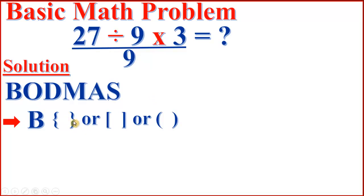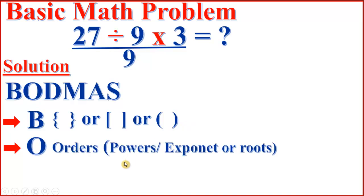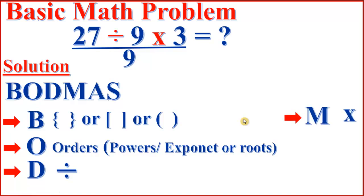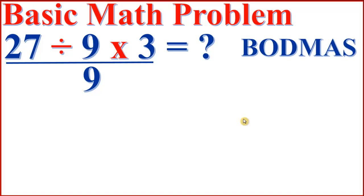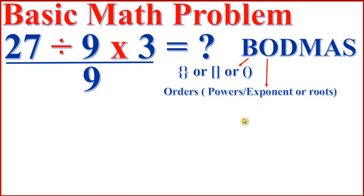To solve this basic maths problem, we have to understand what BODMAS means. B stands for brackets. O stands for orders, which is powers, exponents, or roots. D stands for division. M stands for multiplication. A stands for addition. S stands for subtraction.